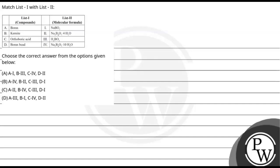Hello, let's read the question. The question says match list 1 with list 2. So here in list 1 we have some compounds given and list 2 has molecular formulas given. We need to know how we match list 1 and list 2. Then choose the correct answer from the options below.